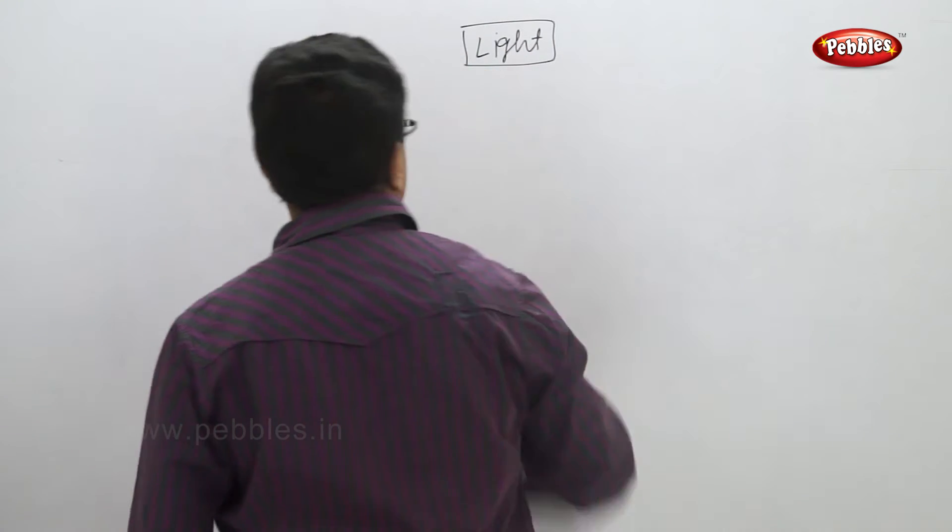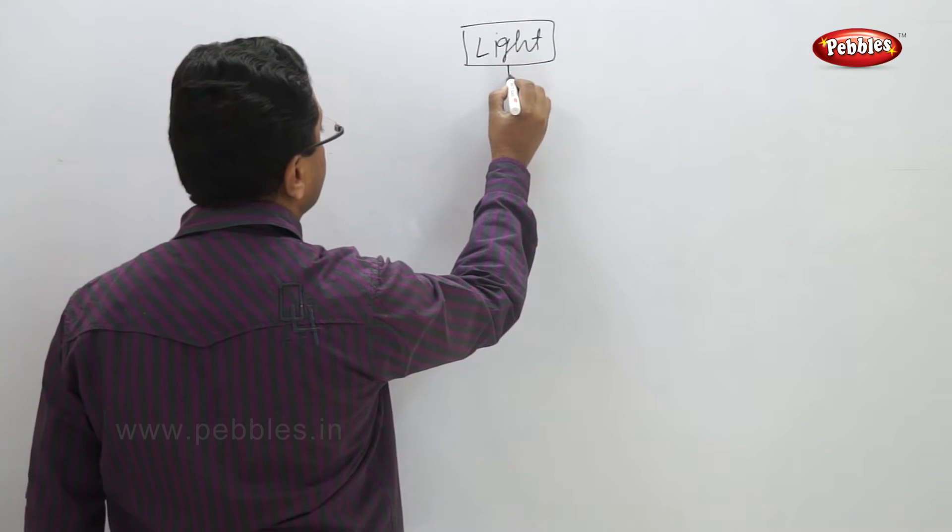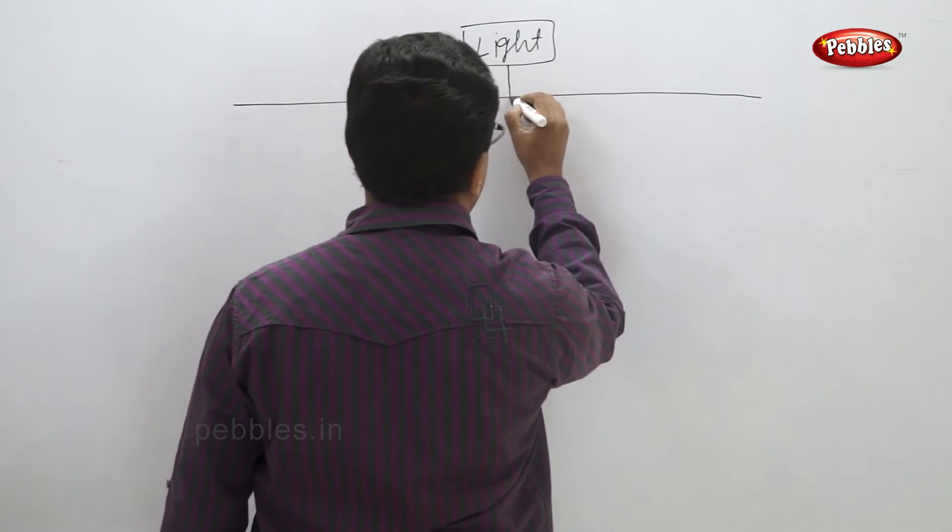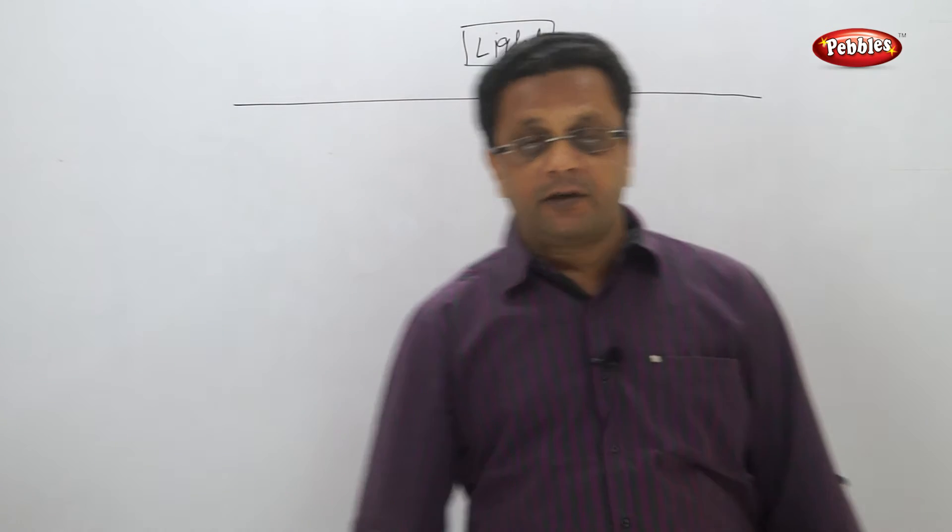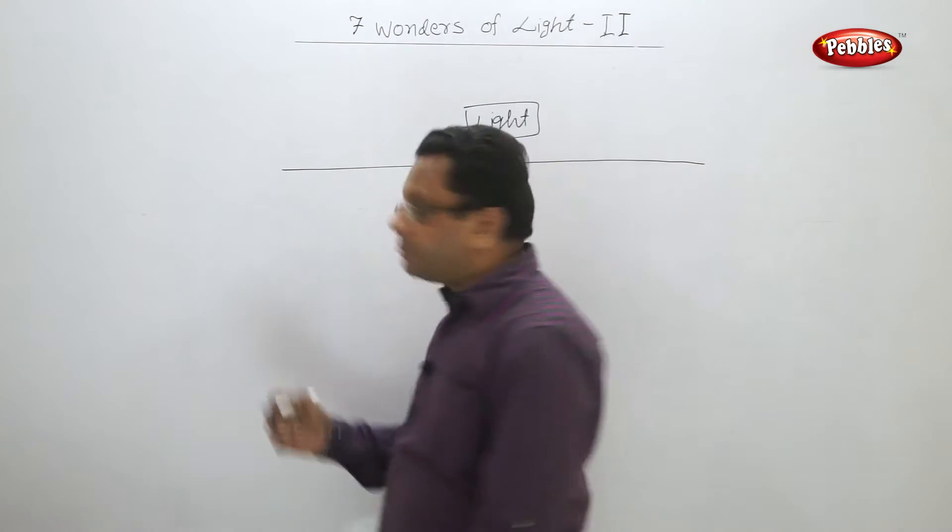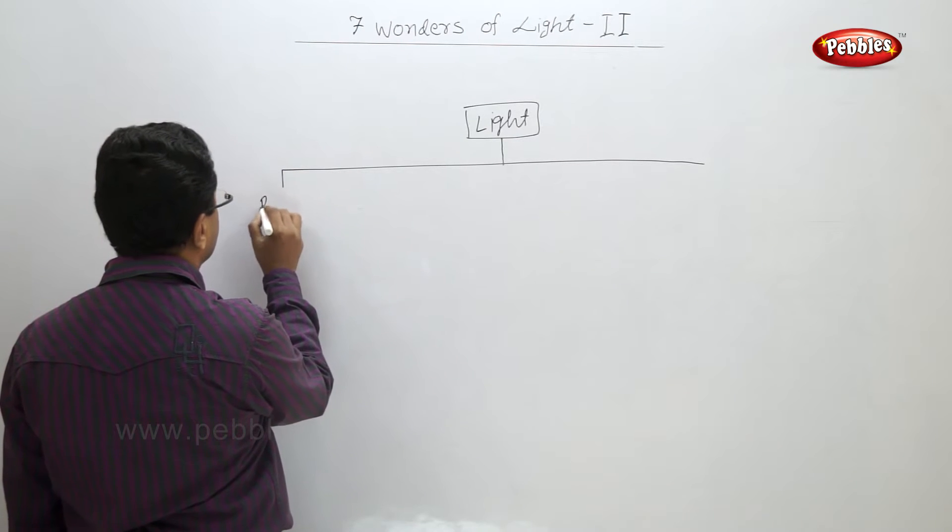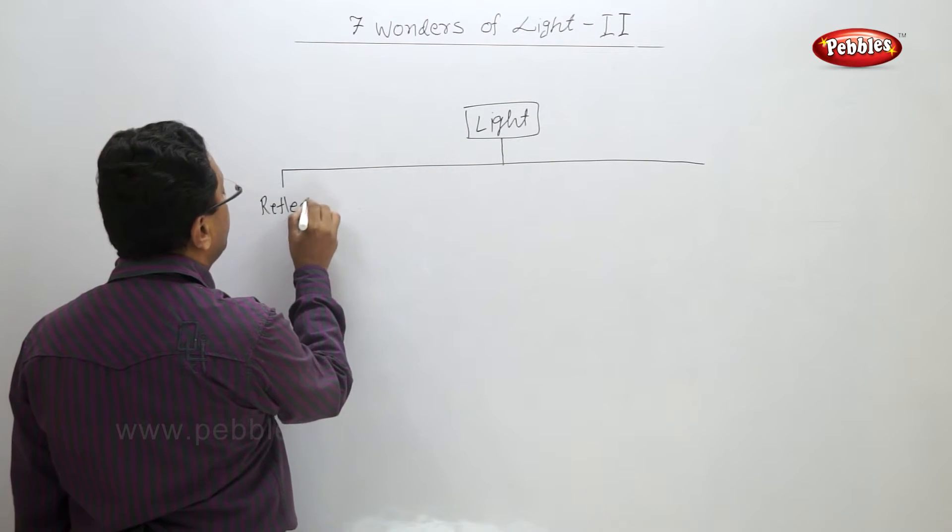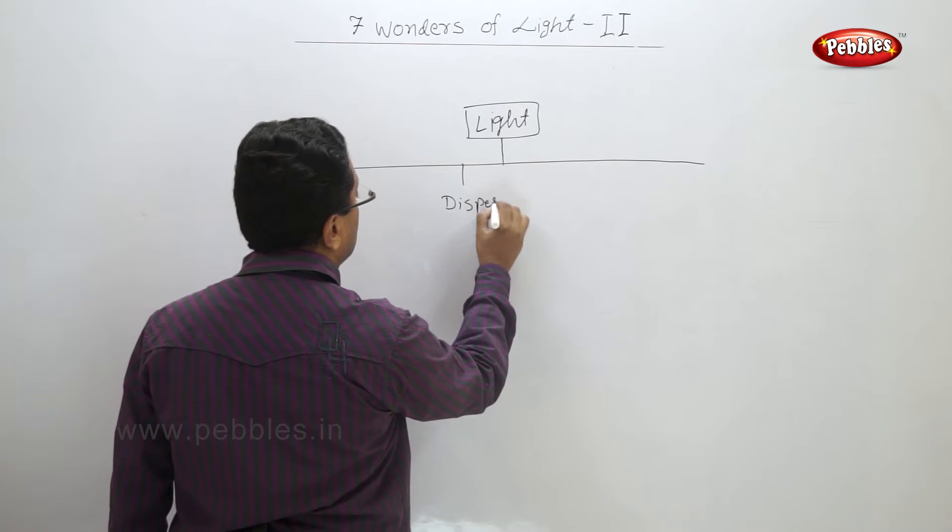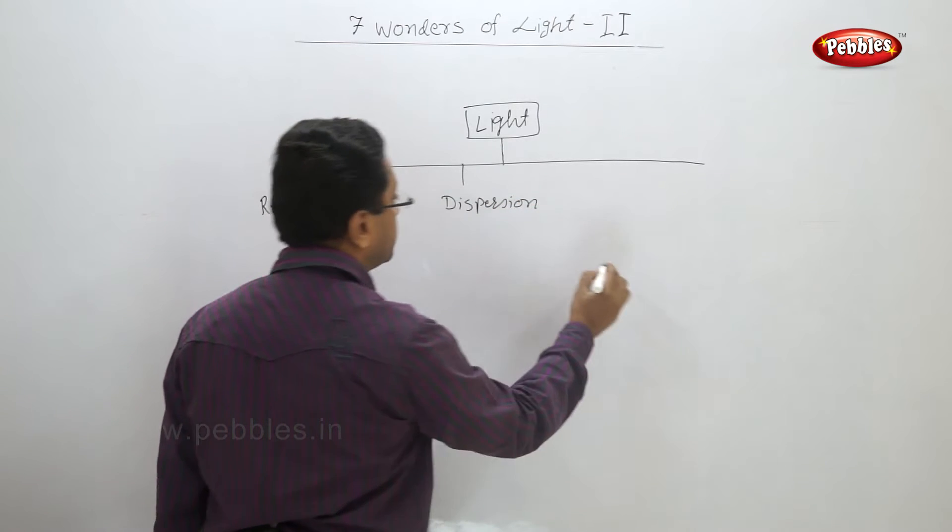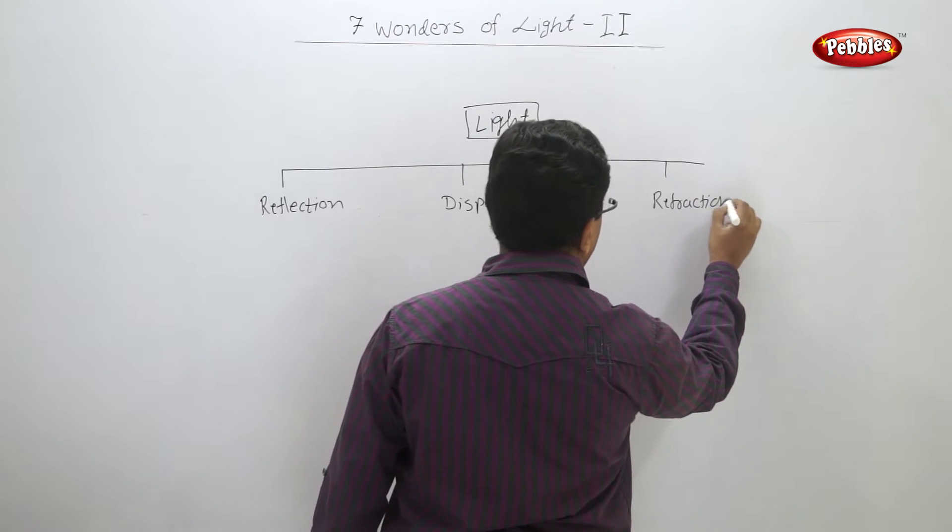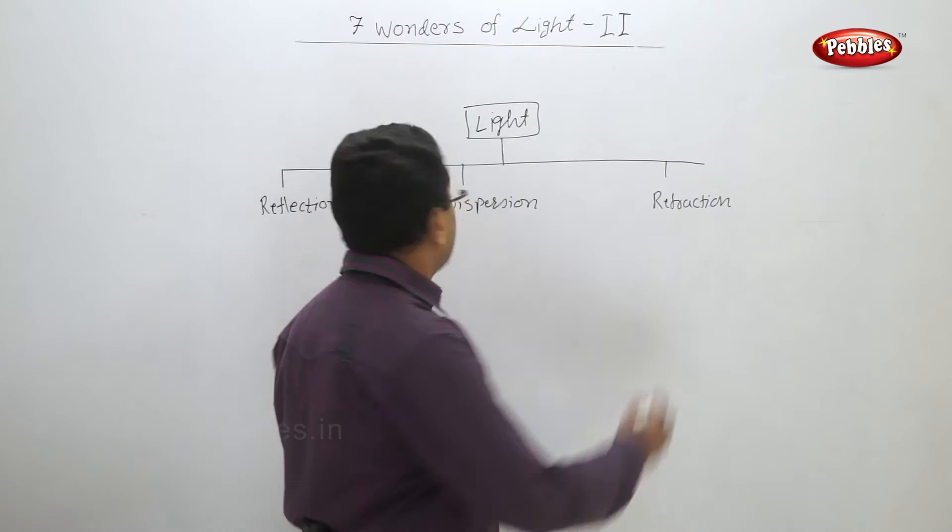The first is - this concept map is a little bit different in your textbook than this. I am making it simple. First is reflection, dispersion, refraction, and scattering. So these are the four phenomena of light: reflection, dispersion, refraction, and scattering.